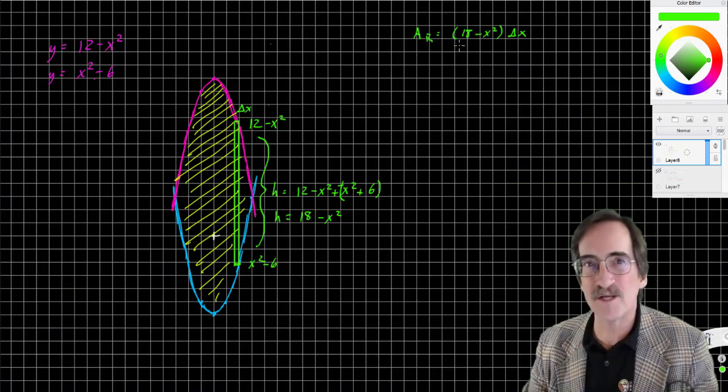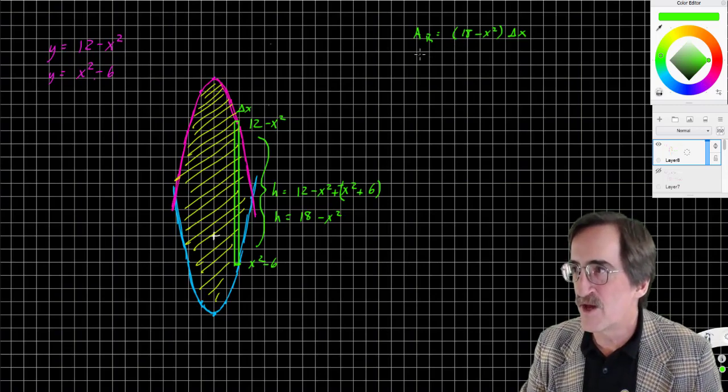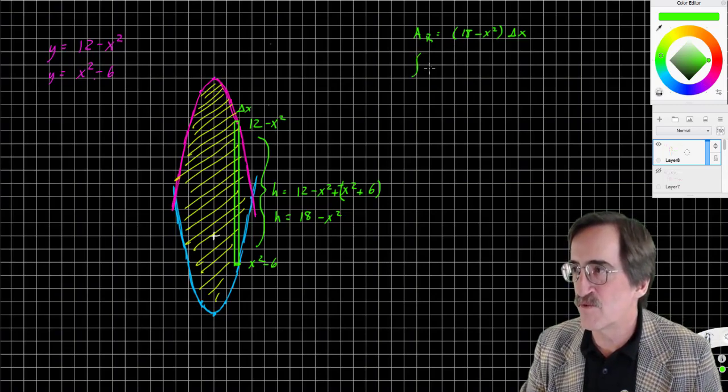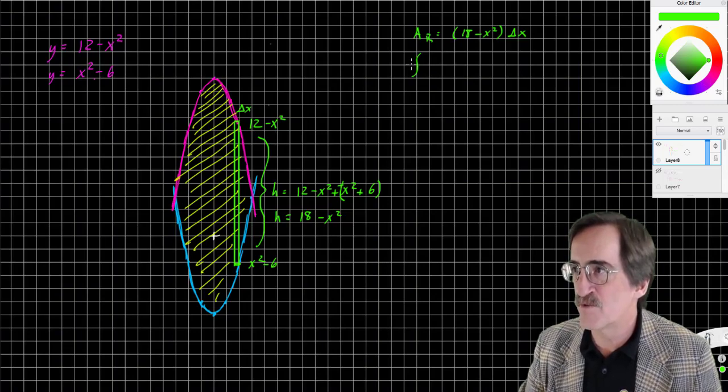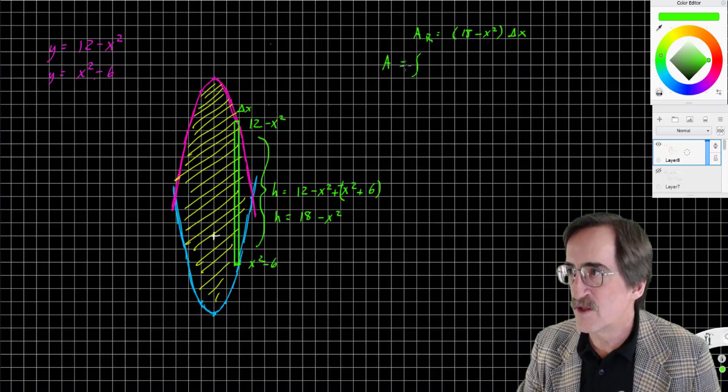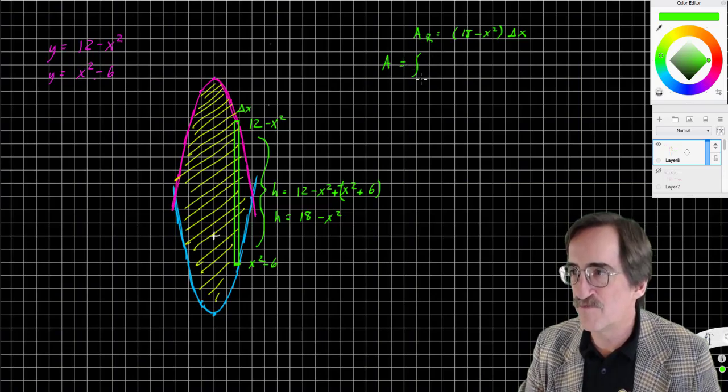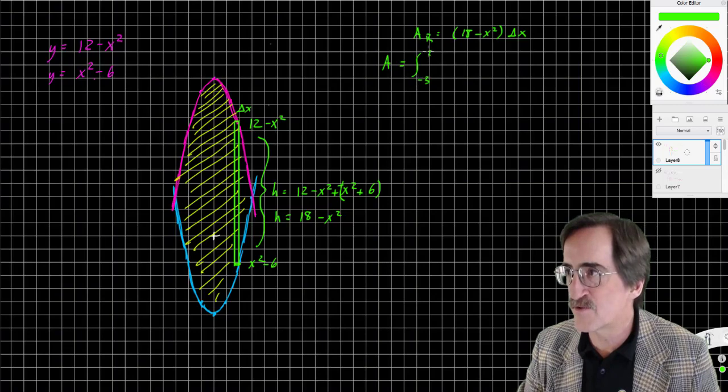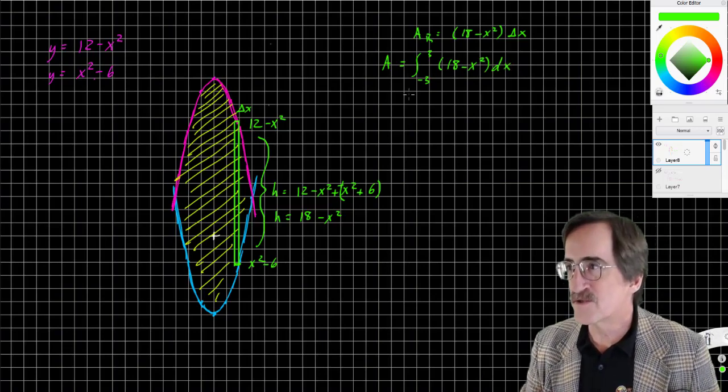Now, if I add up all the slices and take the limit as the width of the slices goes to 0, that is, by definition, a Riemann sum. And it is the definite integral. So the area, not just of the rectangle, but the entire thing, is the definite integral from negative 3 to 3 of 18 minus 2x squared dx. All right, so let's go ahead and do that.